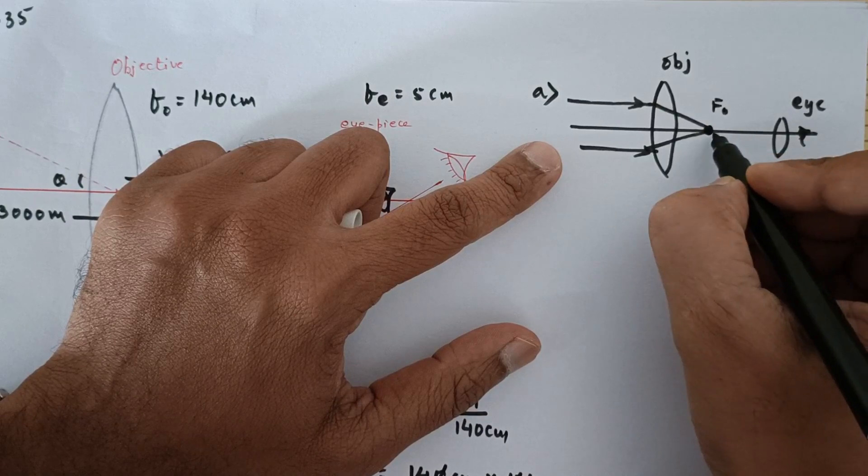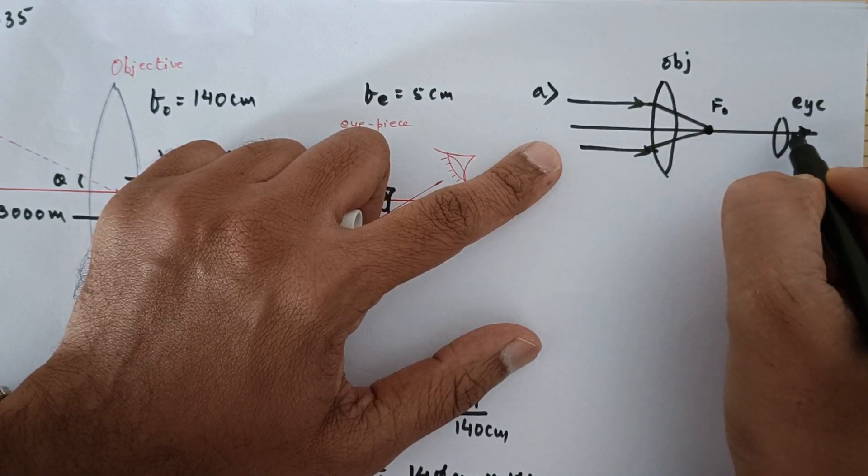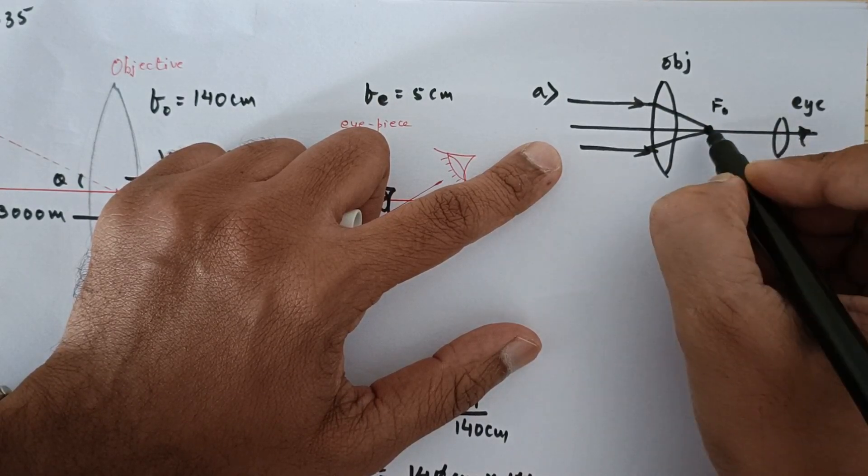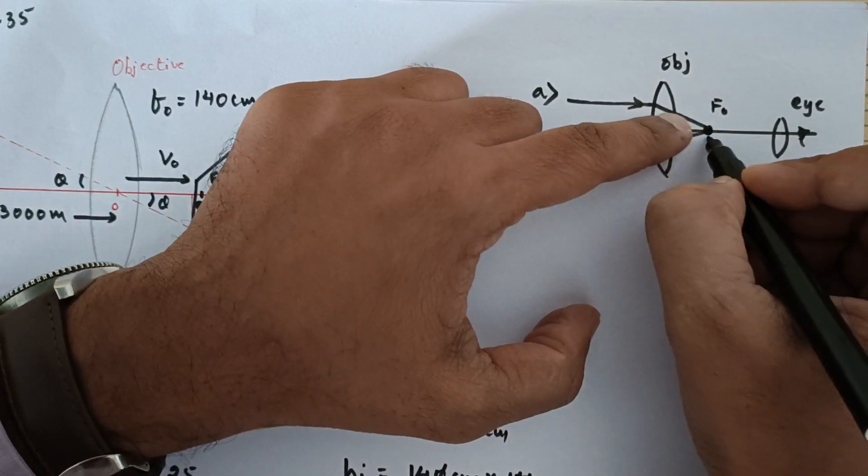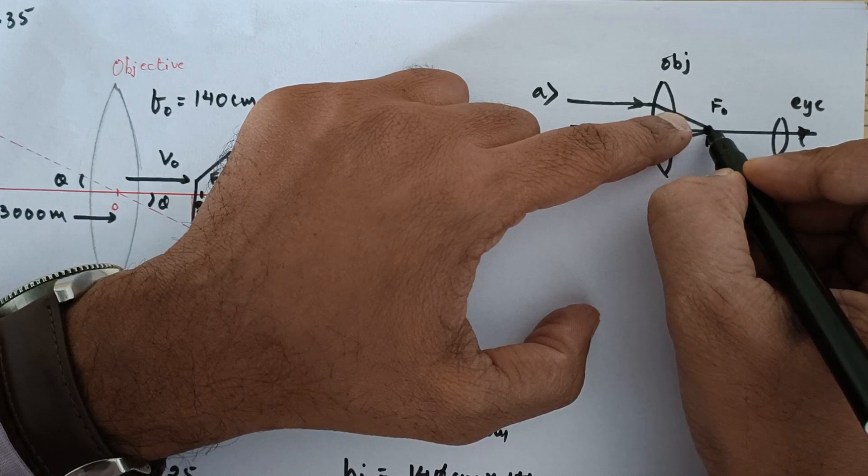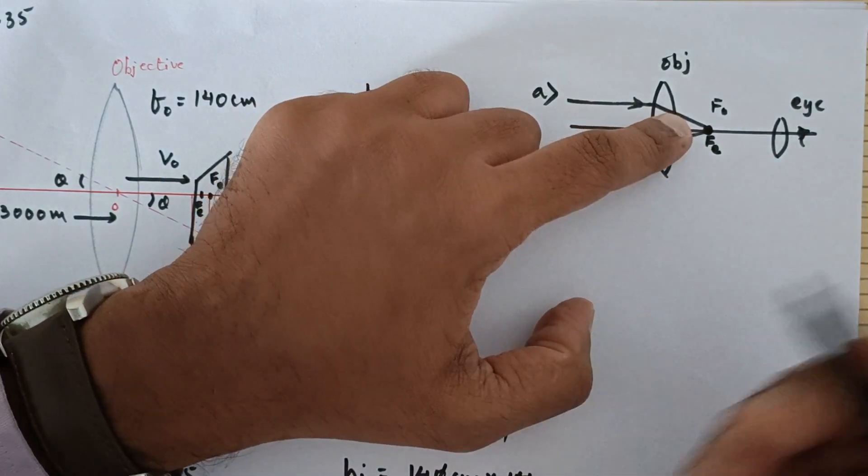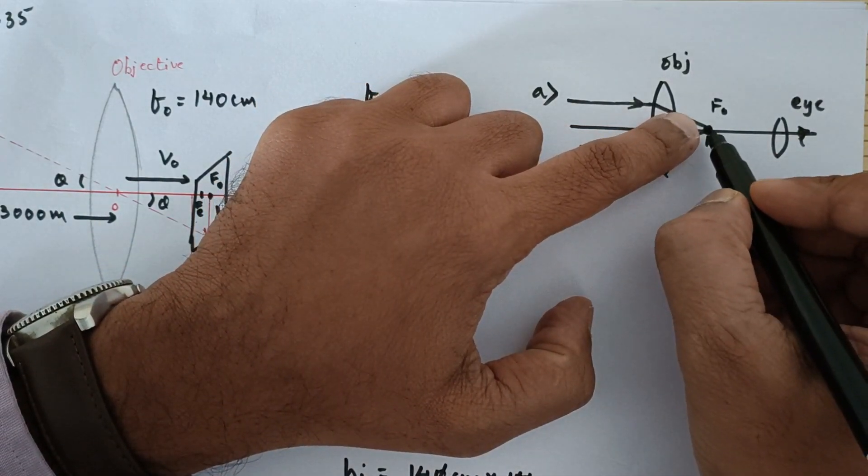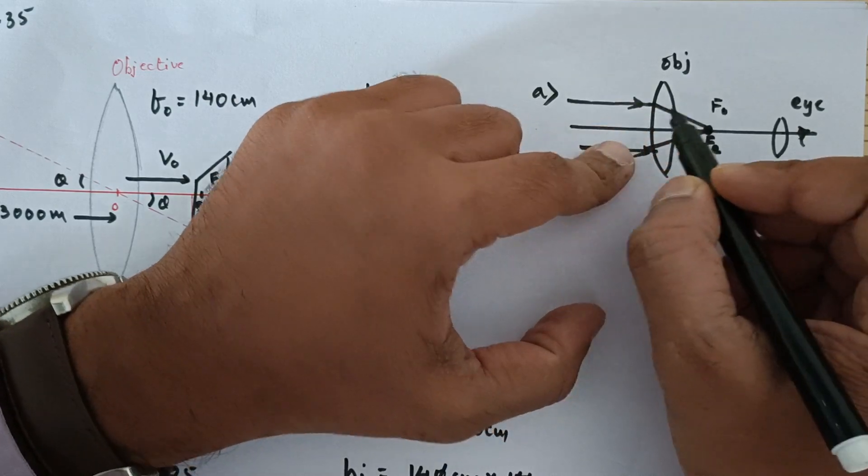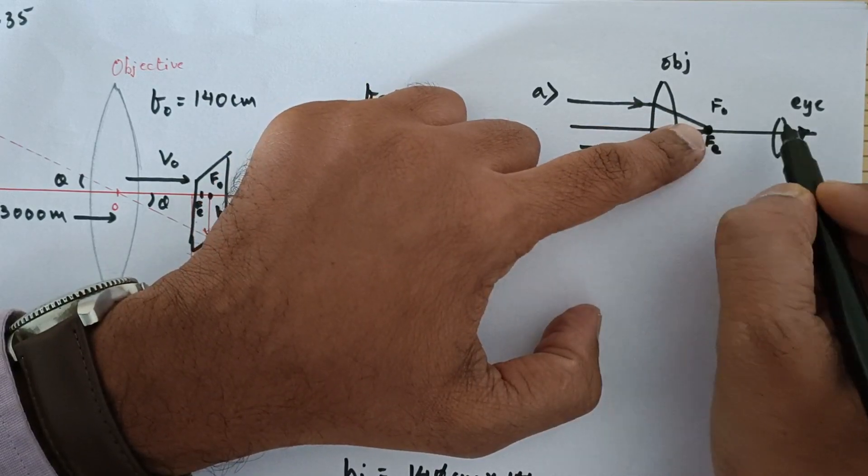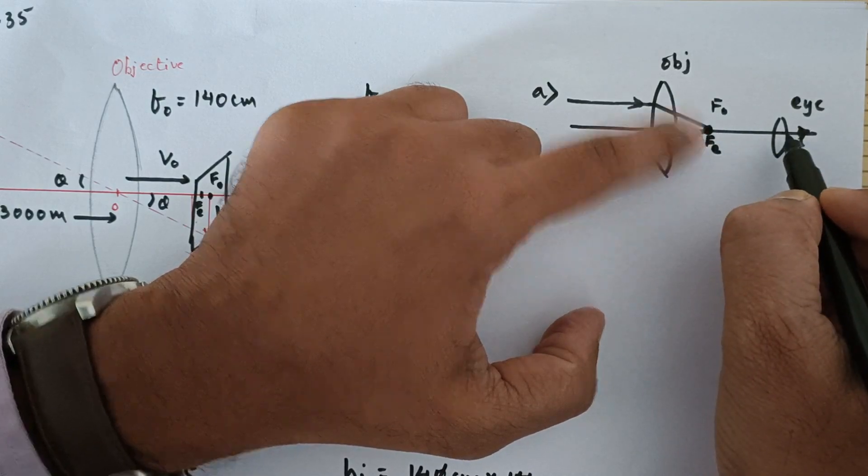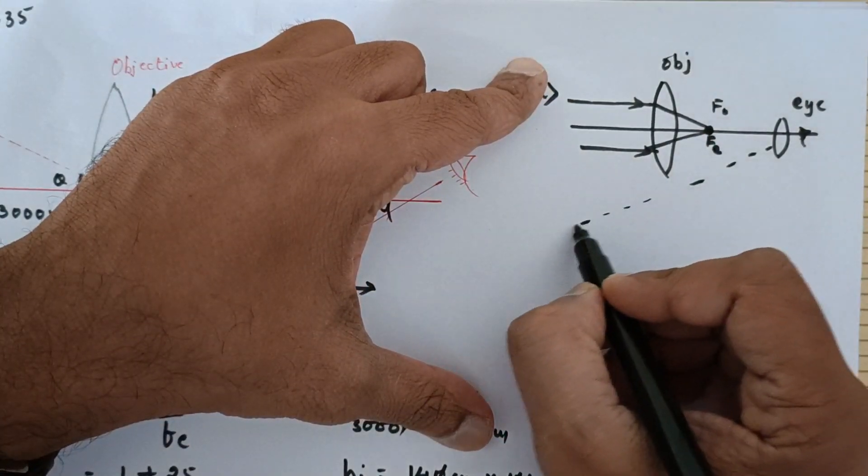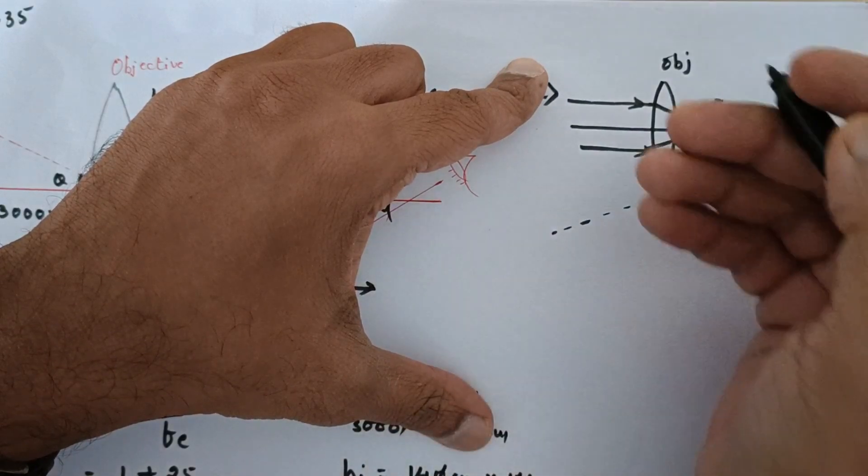Now this image behaves as the object for the eyepiece. Since the eyepiece's focus is also exactly at this point, this image which is the image for this lens is going to behave as the object for this lens. Now when the object is at focus, then and only then the image would be at infinity. That is what is given in the question.